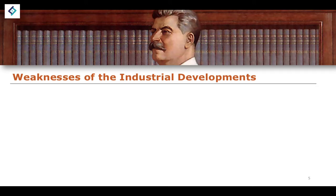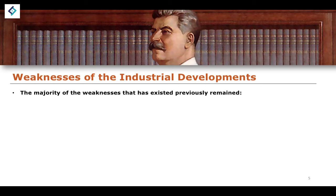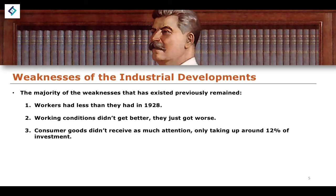This is not to suggest that all of industry was well developed or without weakness. The majority of weaknesses that existed previously in the pre-war five-year plans still remained. For example, workers had less than they had in 1928, worker rights were still significantly worse, and working conditions actually got worse rather than better. Consumer goods didn't receive much attention again, making up only around 12% of investment in the industrial regions.